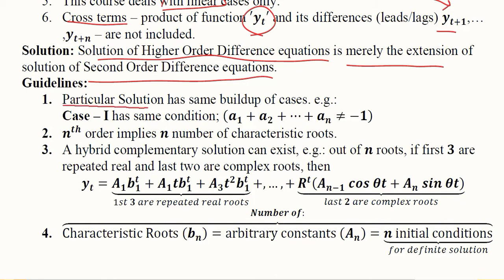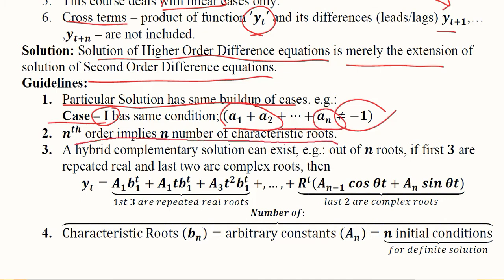From the particular solution, one case was sub-case 1 where the sum of the coefficients was not equal to minus 1. This can be extended so that the sum of coefficients goes up to an. An nth order difference equation implies n number of characteristic roots — the roots will be equal to the order of the difference equation.